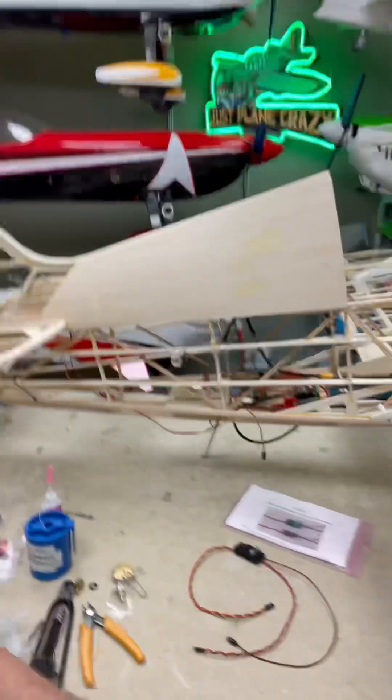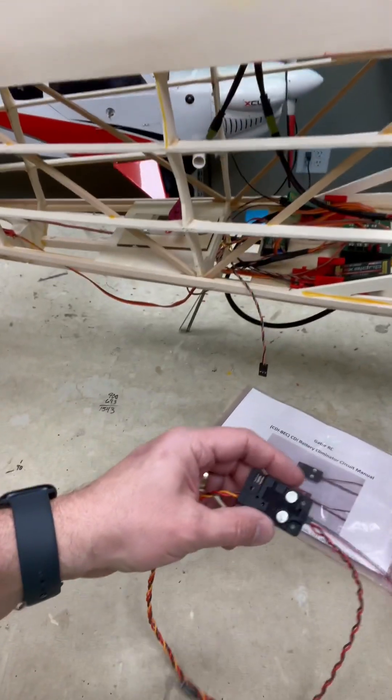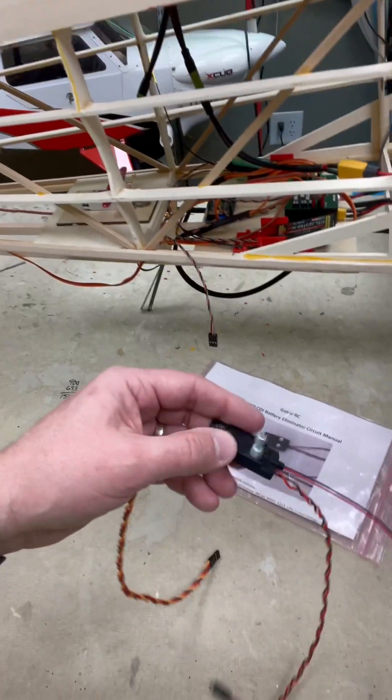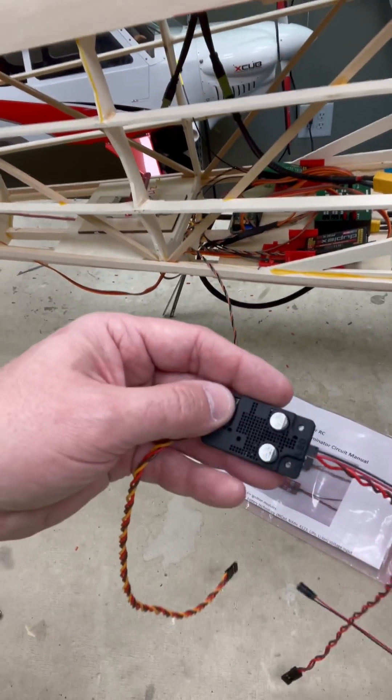Special builds require special products. New from Gator RC, this is their ignition battery eliminator. What makes this different from others you may have seen on the market? Dip switches. That's it.